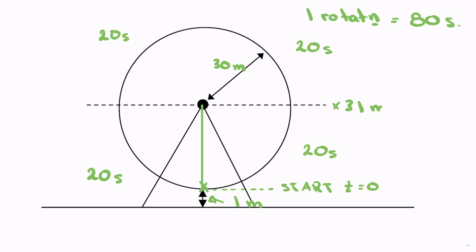At the topmost point, it'll be 31 plus 30, or 61 meters. Back at the middle, it'll be 31 again, and at the bottom it'll be one meter above the ground.